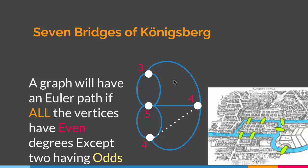And this was it about the seven bridges of Königsberg, Euler paths, and Euler circuits. With this we come to the end of this lecture.